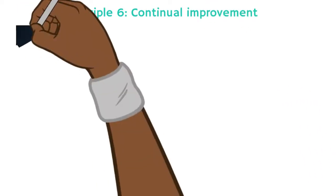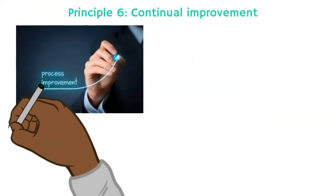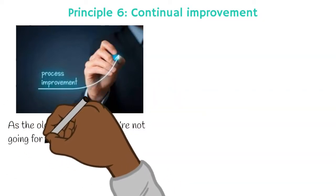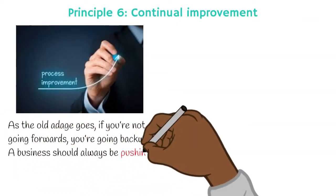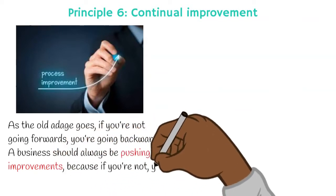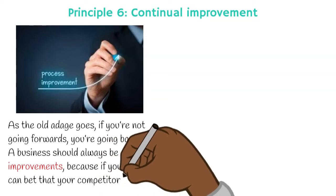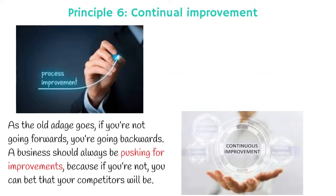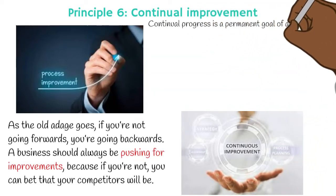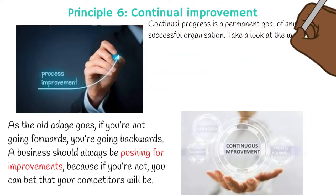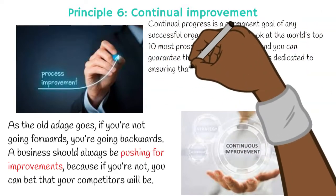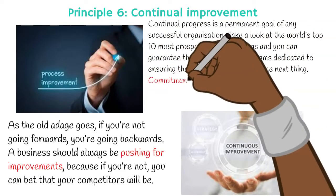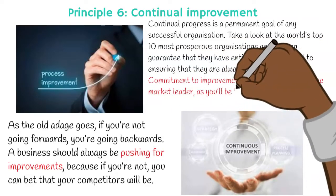Principle six: continual improvement. As the old adage goes, if you're not going forwards, you're going backwards. A business should always be pushing for improvements because if you're not, you can bet that your competitors will be. Continual progress is a permanent goal of any successful organization. Take a look at the world's top ten most prosperous organizations and you can guarantee that they have entire teams dedicated to ensuring that they are always on to the next thing. Commitment to improve also allows you to be the market leader, and shall be the one setting the agenda rather than playing catch-up to your competitors.